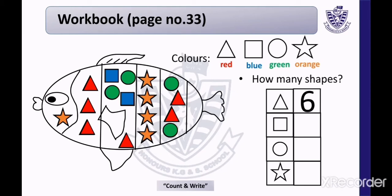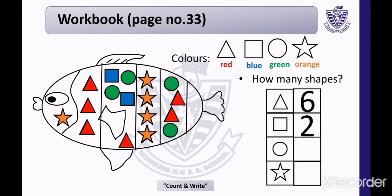Now we will count the squares. How many squares are there? Count with me — 1, 2. There are 2 squares. Now we will write number 2 in the given block.